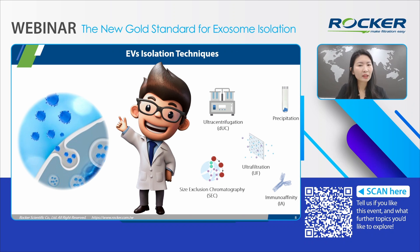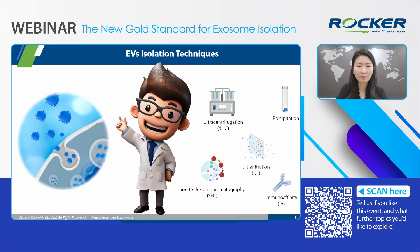There are many EV isolation techniques available, each with its strengths and limitations. Today, we will discuss five commonly used methods, including differential ultracentrifugation, size exclusion chromatography, ultrafiltration, precipitation, and immunoaffinity.